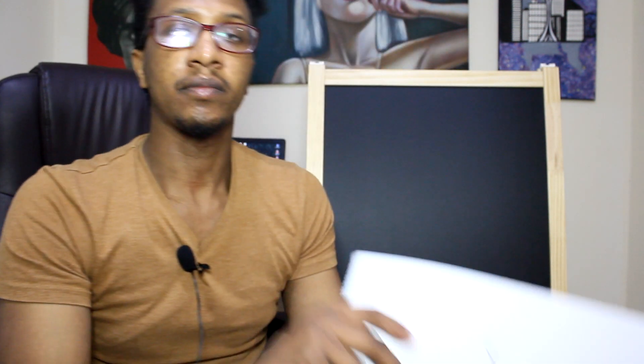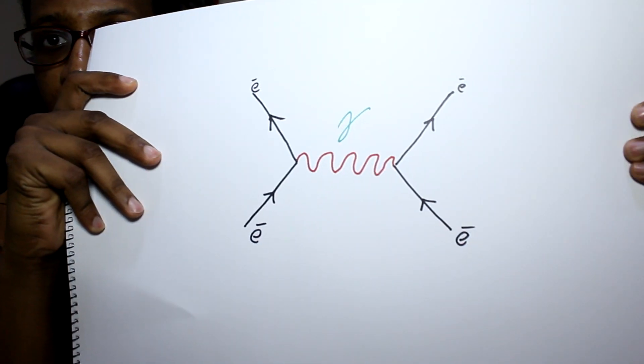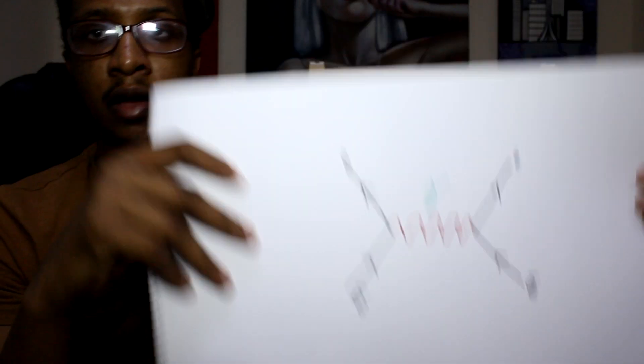Today I'm going to explain the Feynman diagram representation of that same interaction, which is electron scattering. First let me show you the Feynman diagram and then we'll talk about it. The physicist Richard Feynman won his Nobel Prize in physics for his contribution to quantum electrodynamics — how subatomic particles interact with each other — and a part of his contribution was those Feynman diagrams.